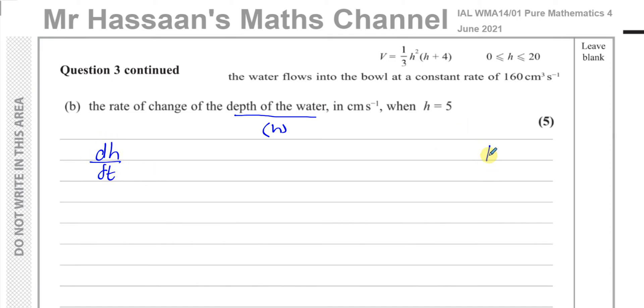Now what they gave us is the water flows into the bowl at a constant rate of 160 centimeters cubed per second. That is actually dV/dt, the rate of change of the volume. That's what they gave us. That's 160. So I know that amount there. And I have to think, what do I have to multiply this by in order for me to end up with dh/dt? So basically the dt has to cancel out. And I have to end up with dh/dt. So the dh has to be here and dV has to be there for me to be left with dh/dt.